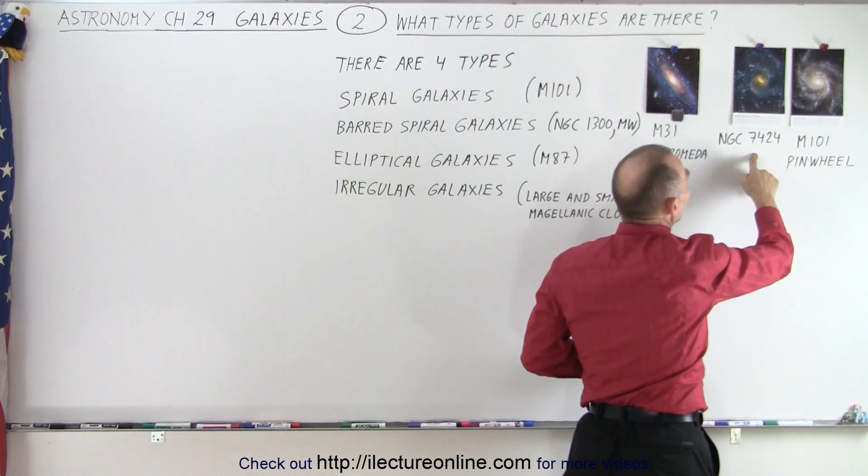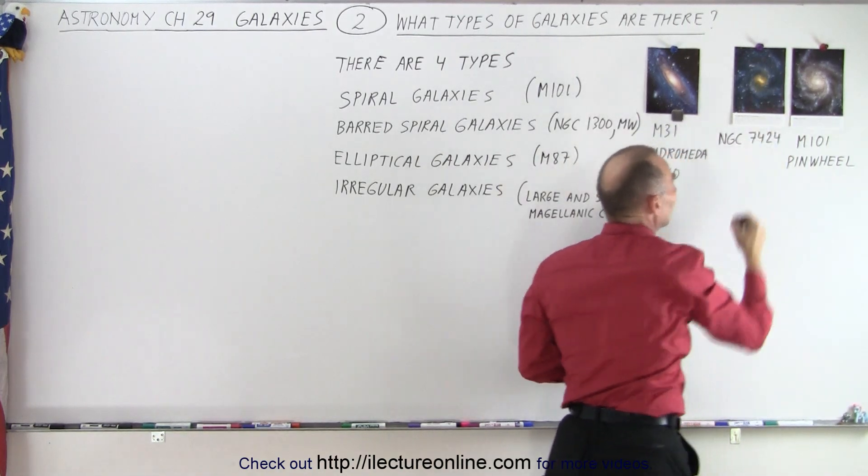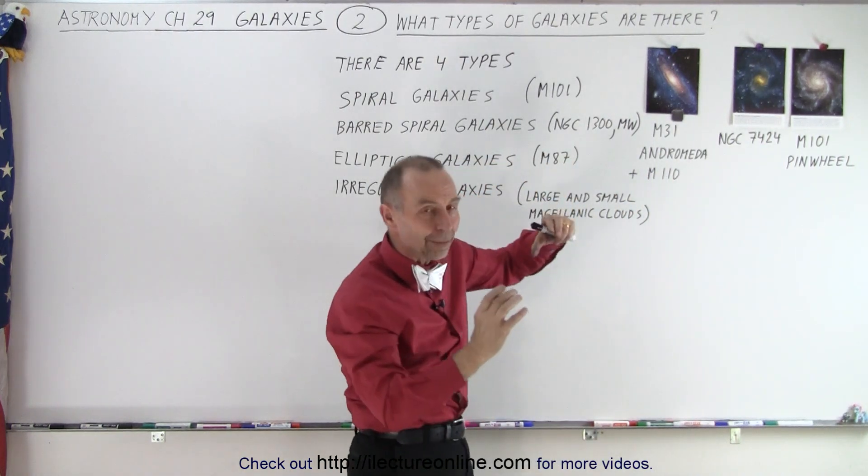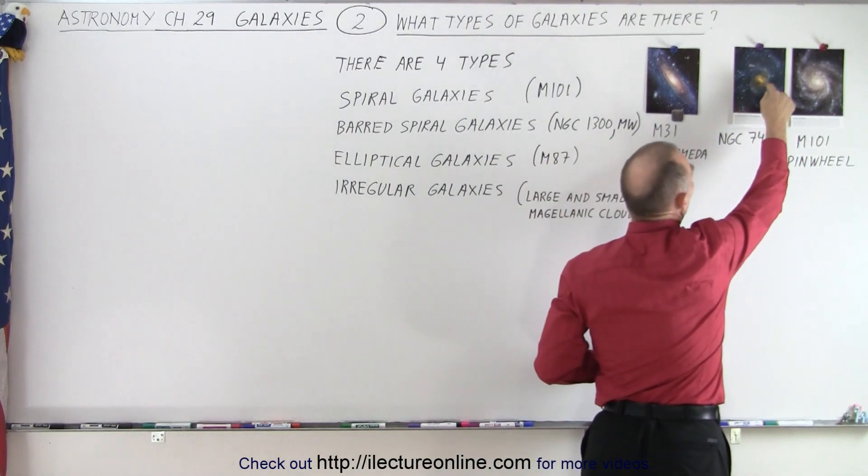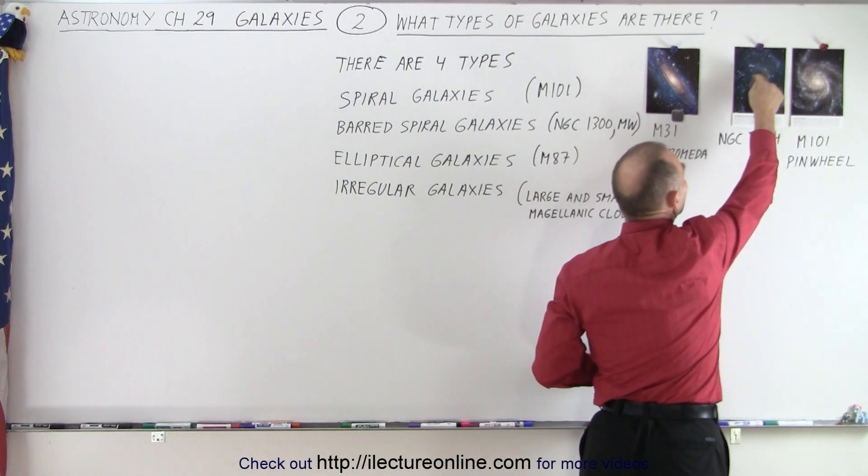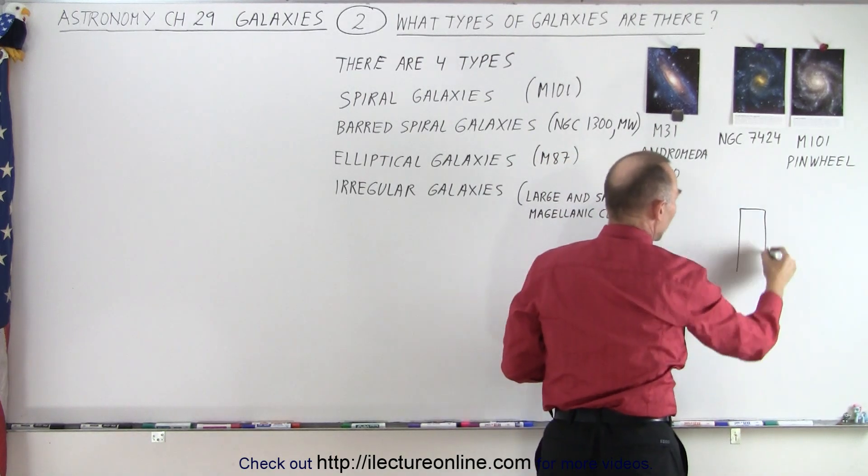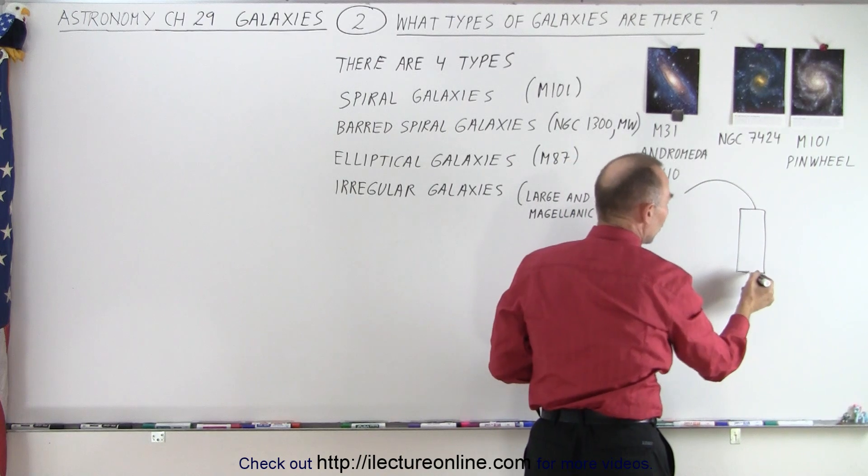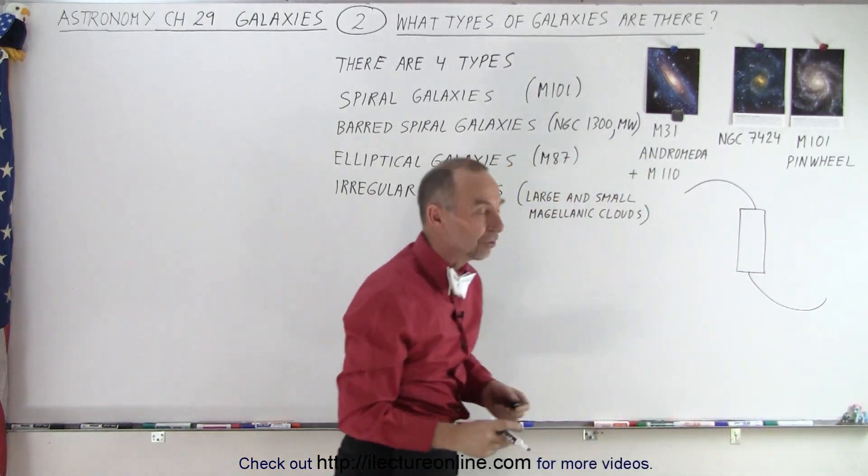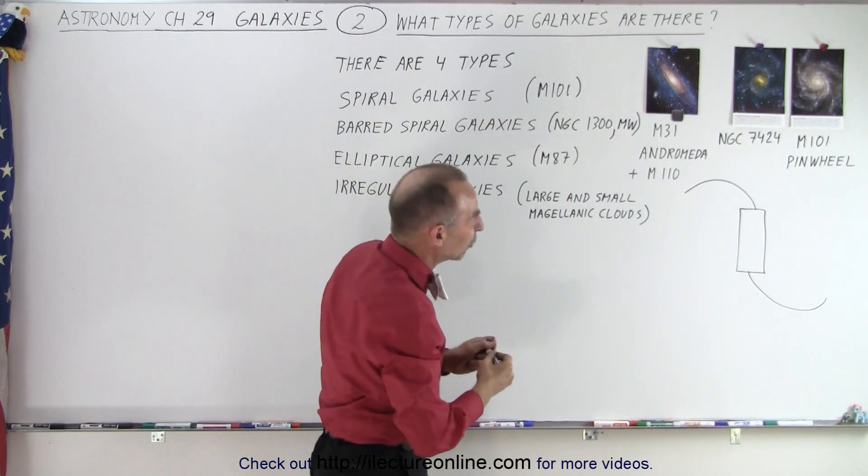And then we have galaxies such as NGC 7424, where the central bulge appears to be a bar shape, almost like a rectangular shape, and the spiral arms emanate away, one from each end of the bar. So essentially what you have is a barred central bulge with a spiral arm coming off one end and another spiral arm coming off the other end.